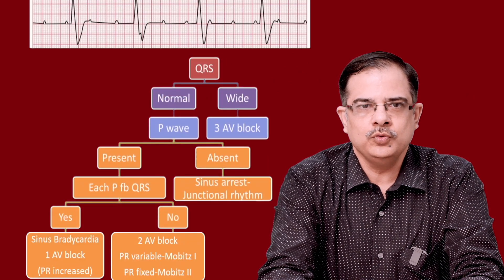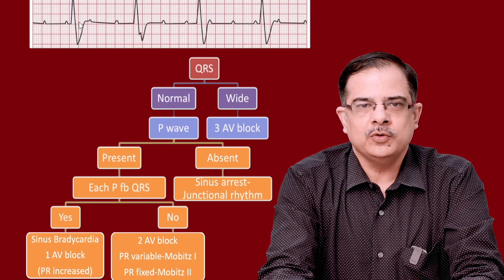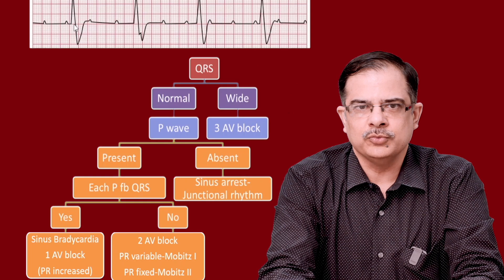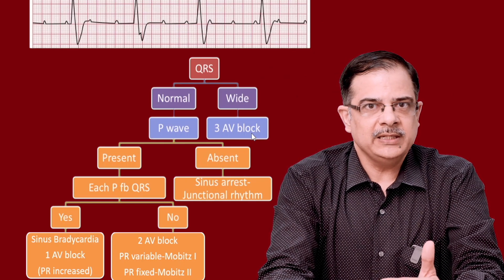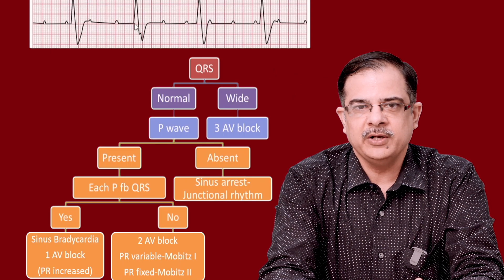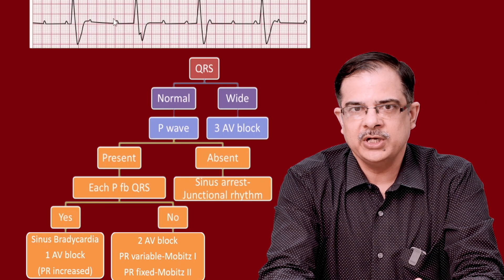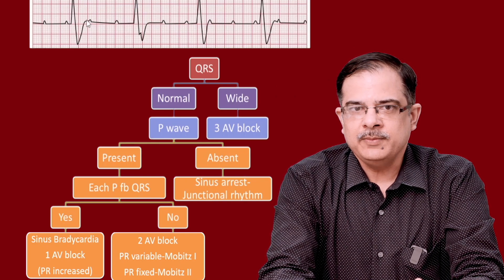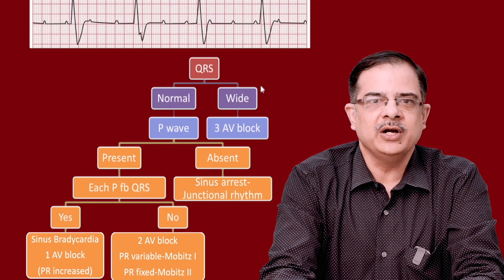The next ECG uses the same flowchart. Looking at the QRS complex: the starting point to endpoint width is approximately 4 to 5 mm — this is a wide QRS complex, indicating third degree AV block. The essential criteria — no relation between QRS and P wave — is also visible here: P wave is coming independently, QRS is independent of P wave, PP interval is constant, and RR interval is constant. Sometimes P waves can be hidden within T waves or QRS in third degree AV block.